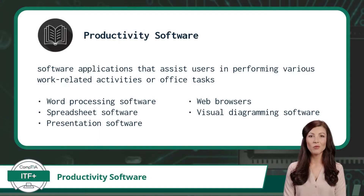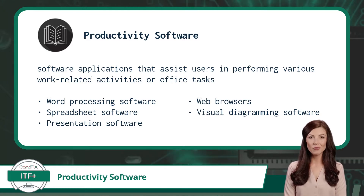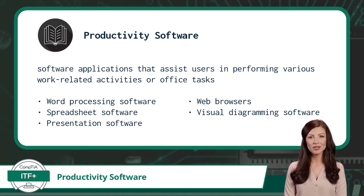Productivity software refers to software applications that assist users in performing various work-related activities and tasks. It empowers users to create, manage, and manipulate digital content, saving time and effort while improving productivity. Some types of productivity software include Word Processing Software, Spreadsheet Software, Presentation Software, Web Browsers, and Visual Diagramming Software. Now let's examine each one of these software types, one at a time.